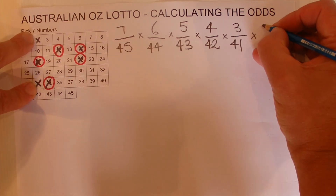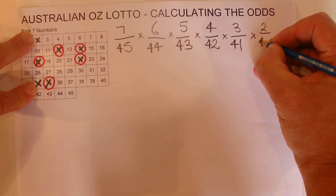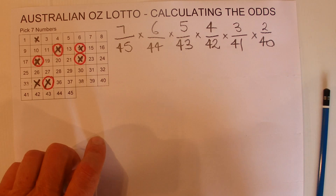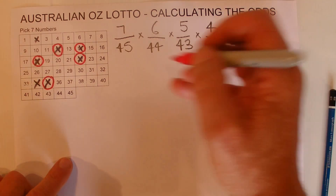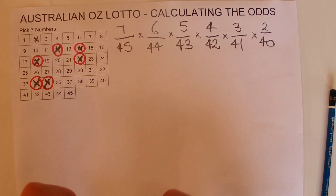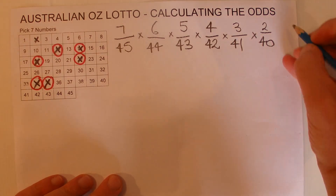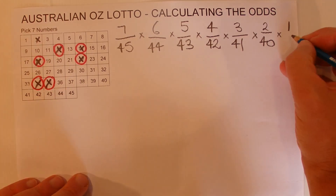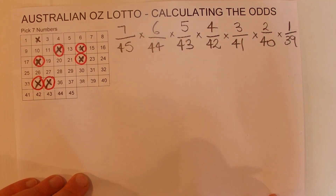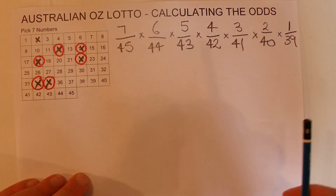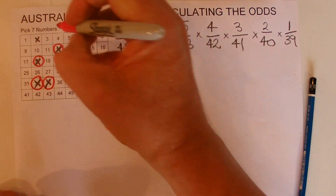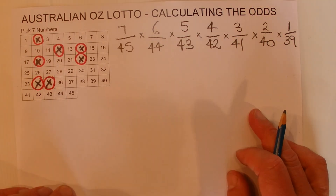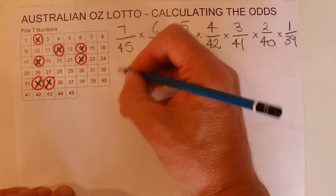For the sixth number, you've got two chances, and this time it's out of 40 — 40 numbers left in the barrel because five have already been drawn as that sixth number comes out. Then when the final ball is drawn, you're left with one chance; there are 39 balls left in the barrel, so you've got one chance in 39 of matching that last seventh number that comes out of the barrel.